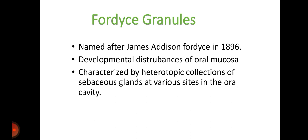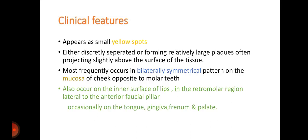It is named after James Addison Fordyce in 1896. It is a developmental disturbance affecting oral mucosa, characterized by heterotopic collection of sebaceous glands at various sites in the oral cavity. Moving on to the clinical features, it appears as small yellow spots, either discretely separated or forming relatively large plaques, often projecting slightly above the surface of the tissue.